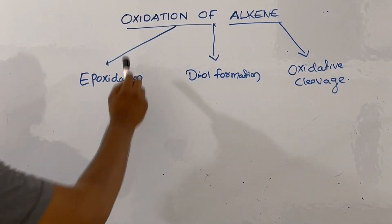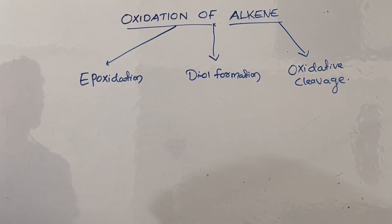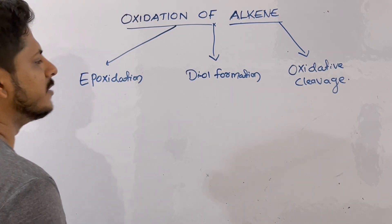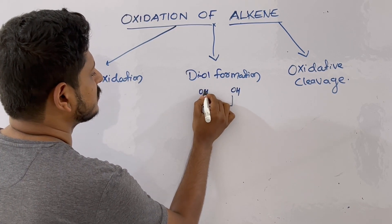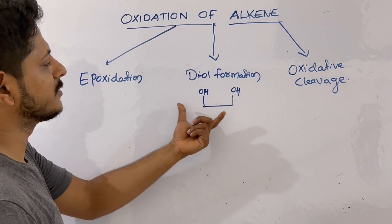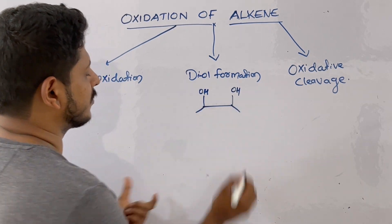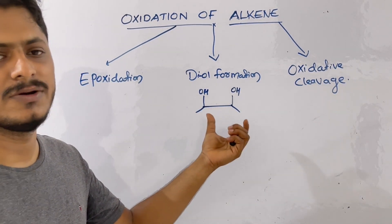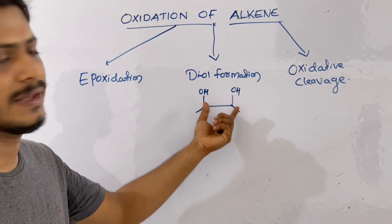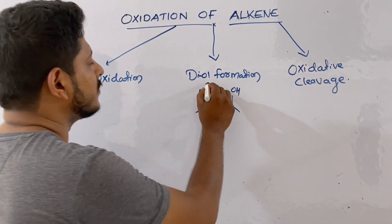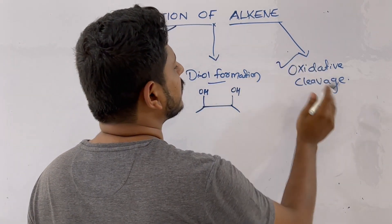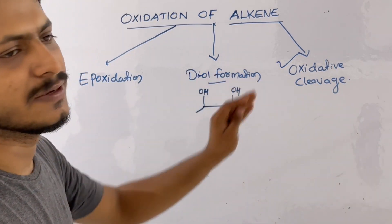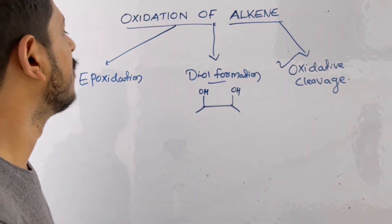The oxidation of alkene is categorized in three parts. The first one is epoxidation reaction. The second one is diol formation — diol formation is basically two hydroxyl groups, which we call a diol. This kind of reagent you might observe in pinacol oxidation and rearrangement reactions. The last one is oxidative cleavage.